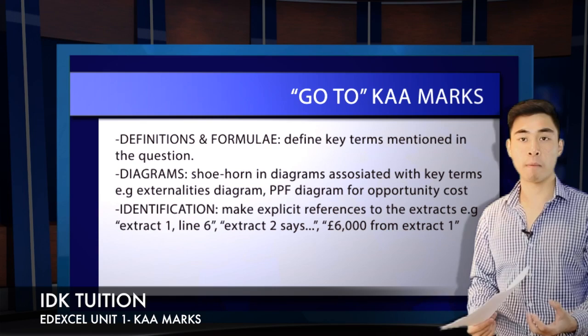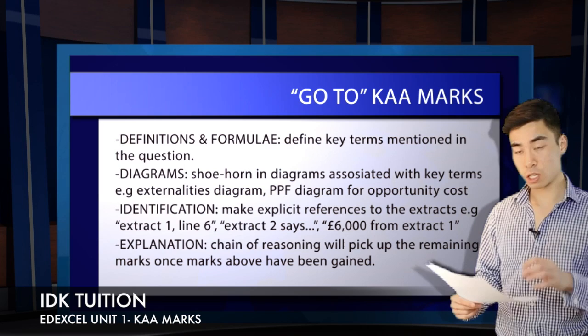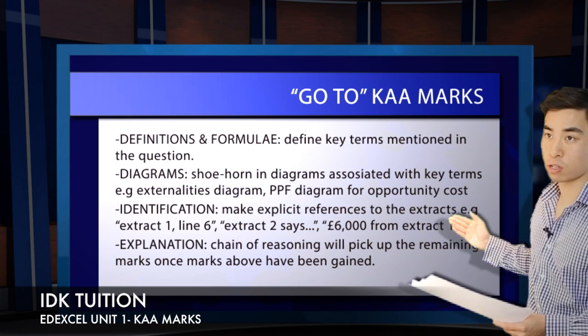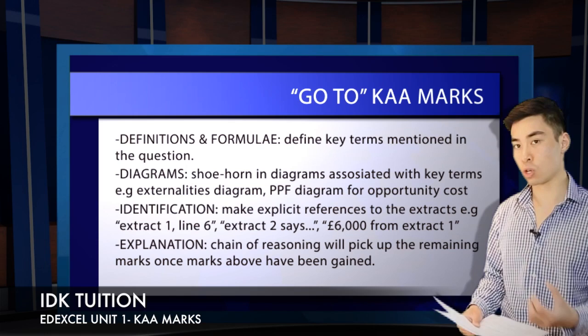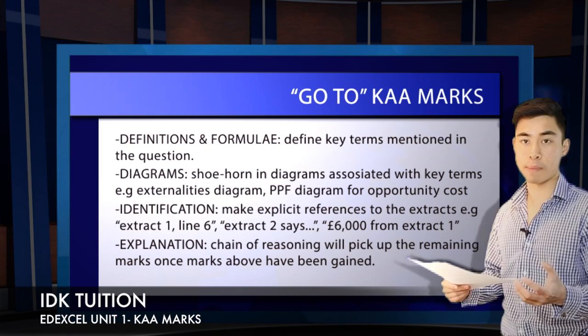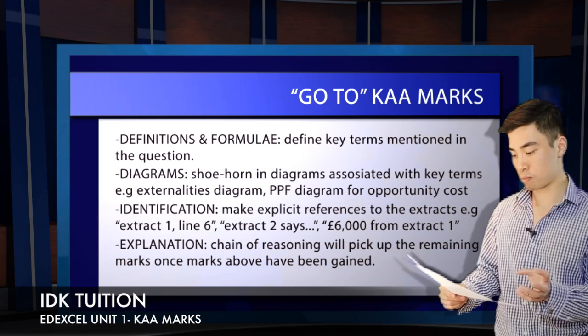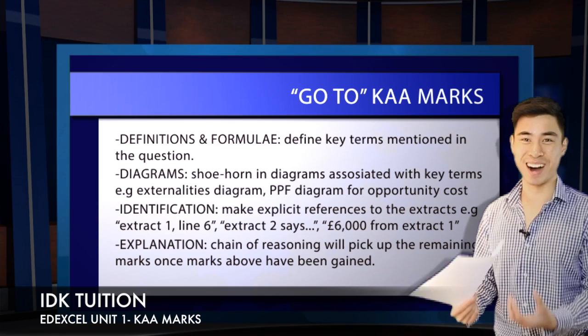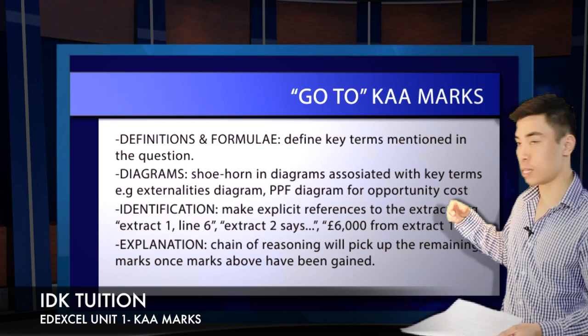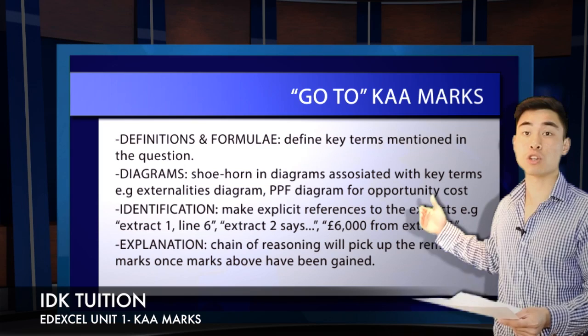The next strand covers the nuts and bolts of actually answering the question — your identification points and reference to the extracts. The best way is referring to actual numerical figures from the extracts. Failing that, you can use quote marks or say 'in extract X, this point is made.' Your final strand is your explanation — actually answering the question. If you've included go-to KAA points like definitions and diagrams, you need to pick up fewer explanation marks.